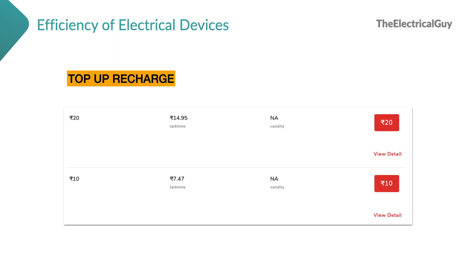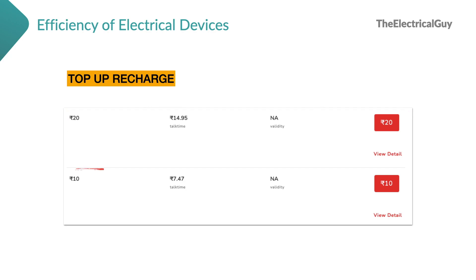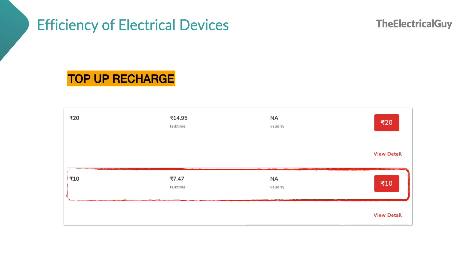When you do a top-up recharge on your mobile phone for talk time, you don't get the full value that you have paid. For example, when you top up rupees 20, you see you get only 14.95 rupees as talk time. Same is with 10 rupees — you only get 7.47 rupees. That means you are not getting 100% of what you are giving, and the same is the case with electrical devices.